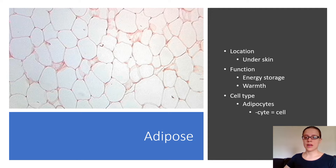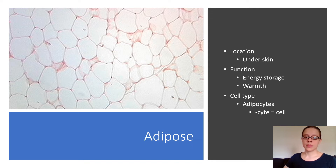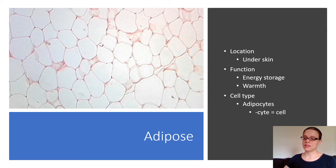Here we have adipose tissue, which stores fat. You can also find it under your skin and also around your organs. Its primary function is energy storage, warmth, and cushioning. The cell type here is an adipocyte. Whenever you see the suffix -cyte, that means it's a cell.